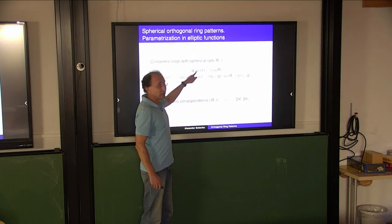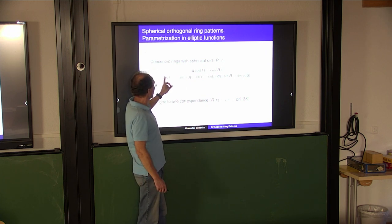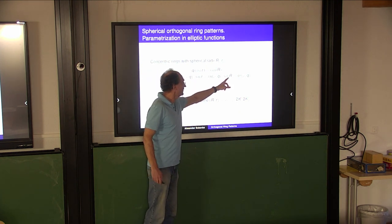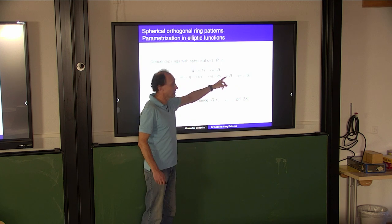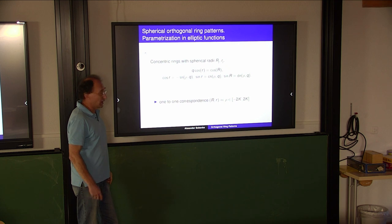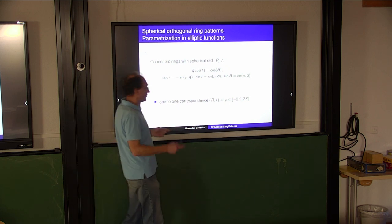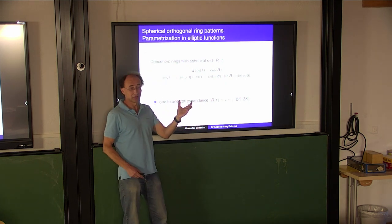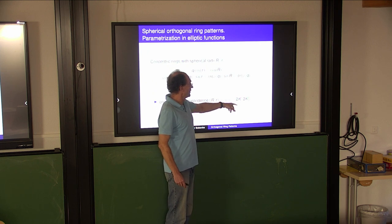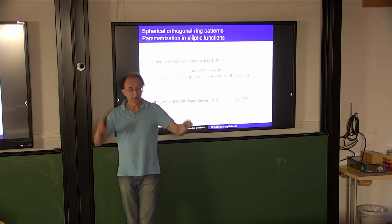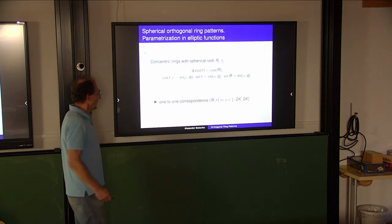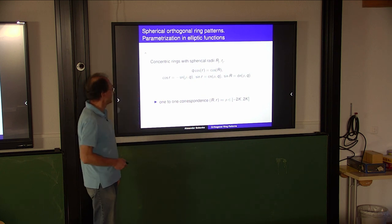With a given q, you can parameterize cosine R and sin R through standard Jacobi elliptic functions. That's the parameterization. You have a one-to-one correspondence between the pair of radii on the sphere and this rho, which is now an argument of an elliptic function - a point on an elliptic torus. That's the parameterization for the sphere.